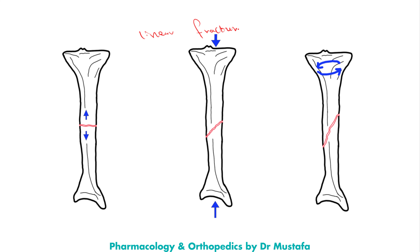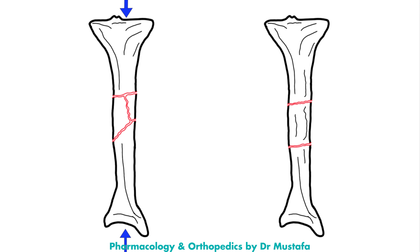Here are examples of the linear fractures. We have different subtypes: this one is the transverse linear fracture, here we have the short oblique, and here we have the spiral fracture which is also the long oblique fracture. Now here we also have the comminuted fracture and the segmental fracture.